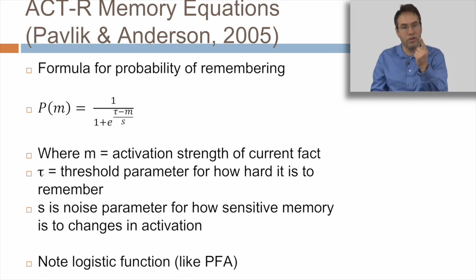m, the activation strength of the current fact, tau, the threshold parameter for how hard it is to remember, and s, the noise parameter for how sensitive the memory is to changes in activation. In other words, when you re-encounter a fact, how much better does your memory get? And you should note here, by the way, a logistic function like PFA from a couple lectures ago. Now mind you, that's not because this was building off PFA. It's because PFA was building off of this.